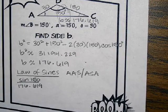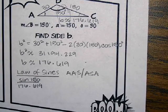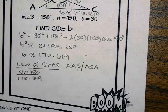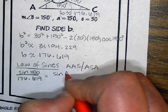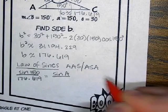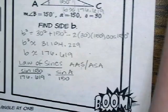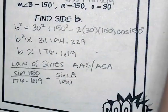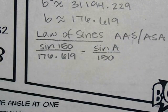Law of sines is totally fine in this problem. We will make no mistakes — we're not going to get an angle-side-side problem. So let's do angle A. I'm going to say this equals sine of angle A divided by side A, which is 150. To do this problem I have law of sines, so what do I do? Cross-multiply.